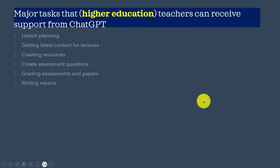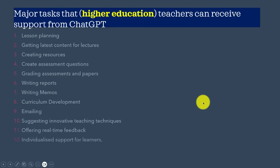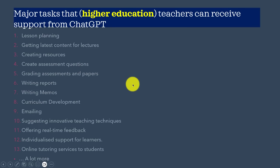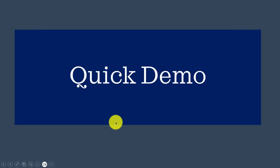What are the major tasks for a university teacher, polytechnic, or college of education? We plan our lessons — you've got to plan your lesson as a teacher. We get the latest content for lectures from ChatGPT. You get resources, create assessment questions, develop questions. ChatGPT is there for you. Grading, assessments and papers, writing reports, emails, memos, curriculum development, innovative strategies — it's there. Real-time feedback and individual support for learners — and a lot more.